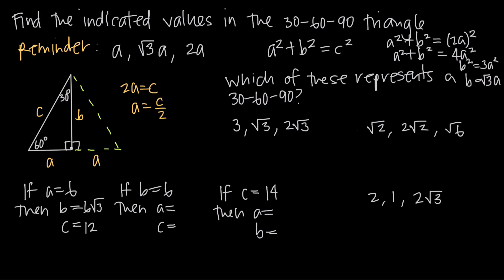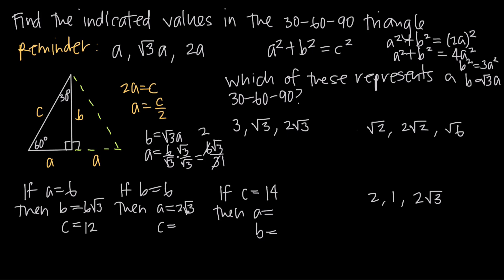What if we're given the length of the longer leg, side B? Well, in that case, to find A, we know that 6 = √3 · A. So if we divide both sides by √3, we get A = 6/√3. To rationalize the denominator, we multiply by √3/√3, giving us 6√3 divided by 3.